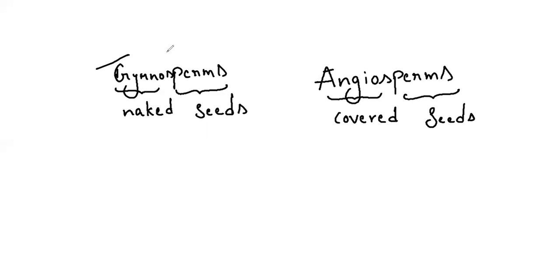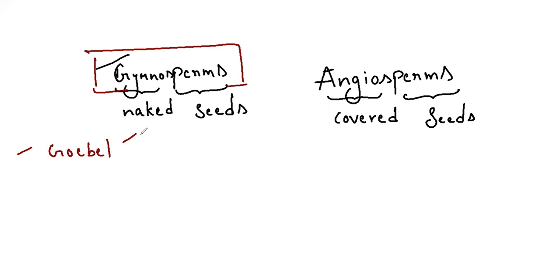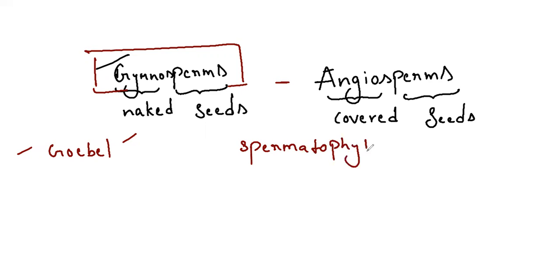In this video we are going to cover gymnosperms and angiosperms. The first point is Gobel, who gave the concept of phanerogams without ovary. Because there is no ovary, there is no fruit — only seeds. The ovules are naked, so you can see the seeds directly. The study of gymnosperms is known as gymnospermology, and the study of angiosperms is called angiospermology. Together, angiosperms and gymnosperms are called Spermatophyta — seed-bearing plants.